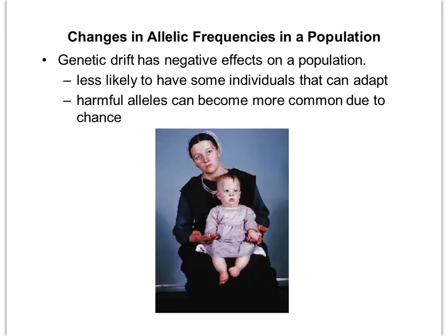Genetic drift can have negative effects on a population. It's less likely that some individuals will adapt because it often reduces the amount of genetic variation. Also in small populations, harmful alleles can become more common just due to chance. A good example is a certain Amish community showing high levels of a genetic disorder — typically Amish populations don't have people moving in and out, so they reproduce within a very small gene pool, making harmful alleles more common by chance.